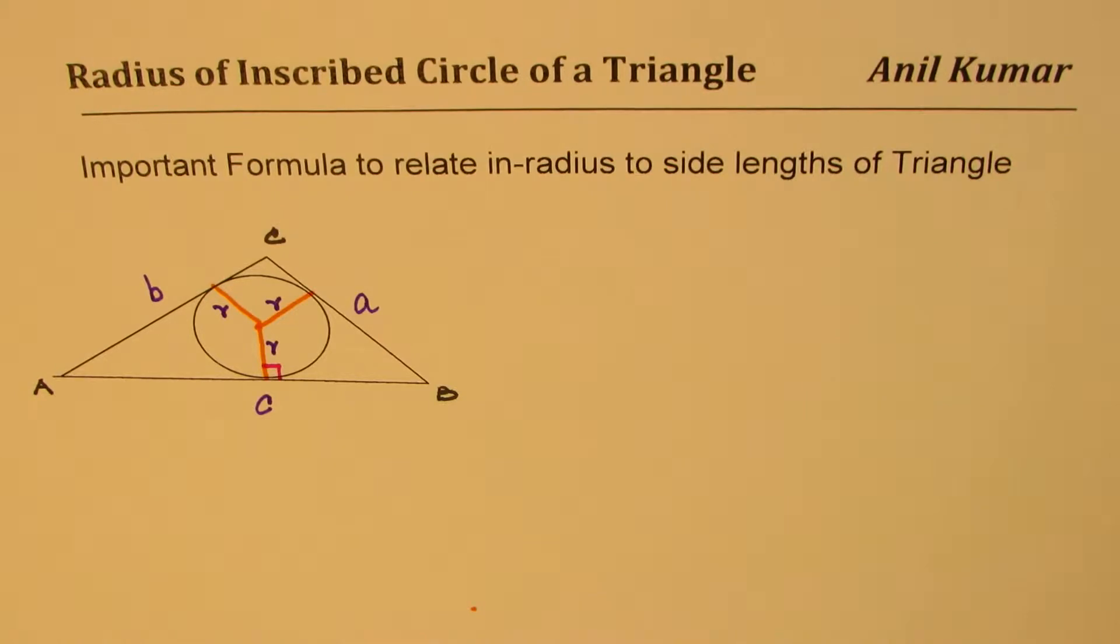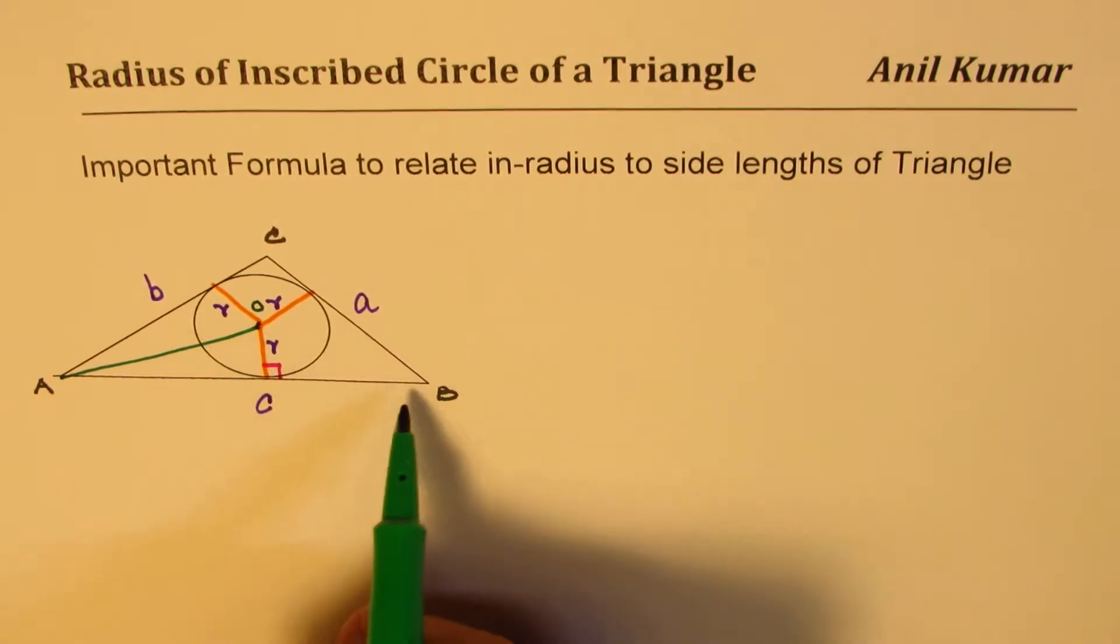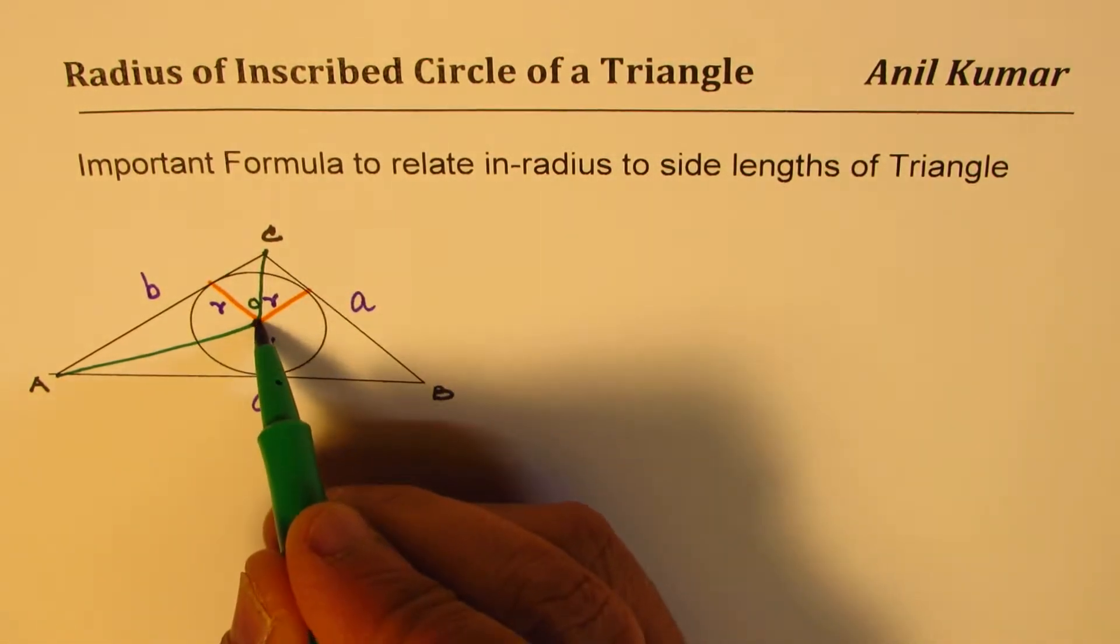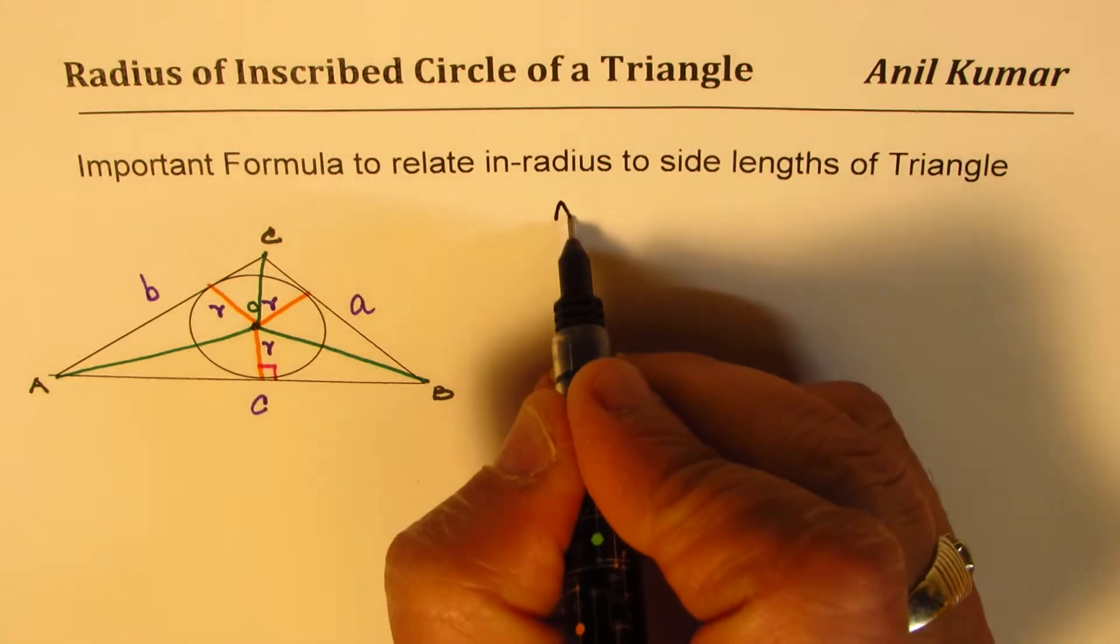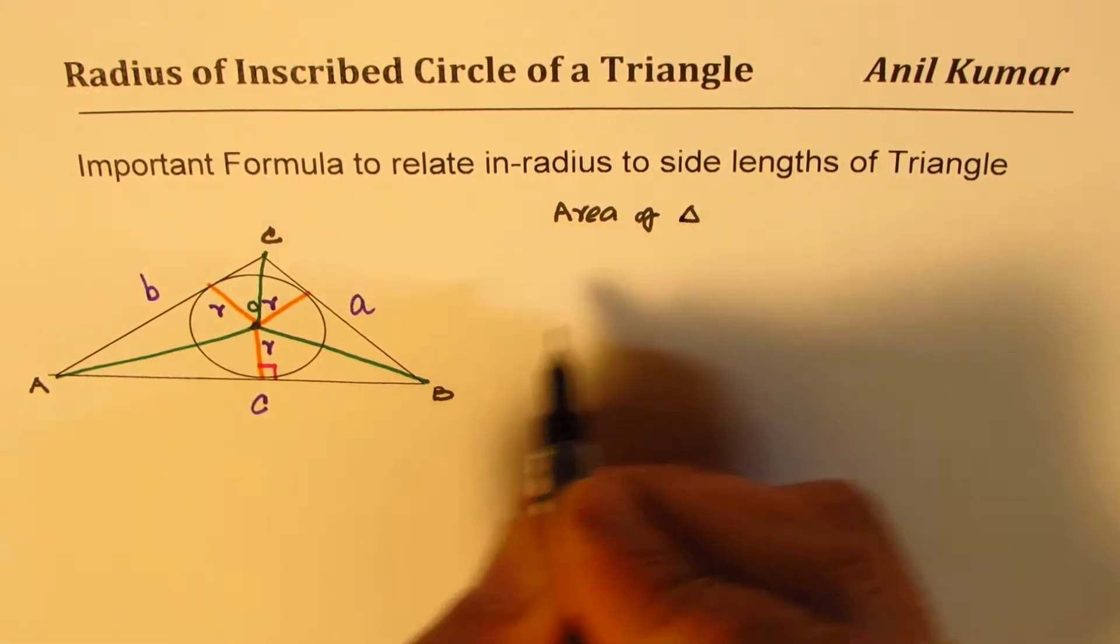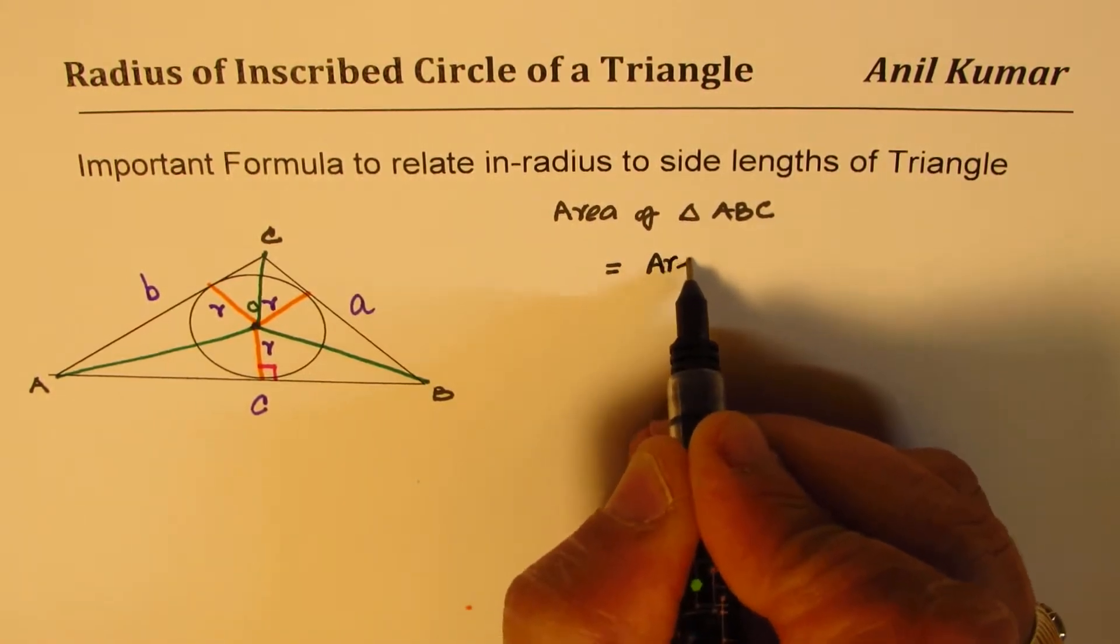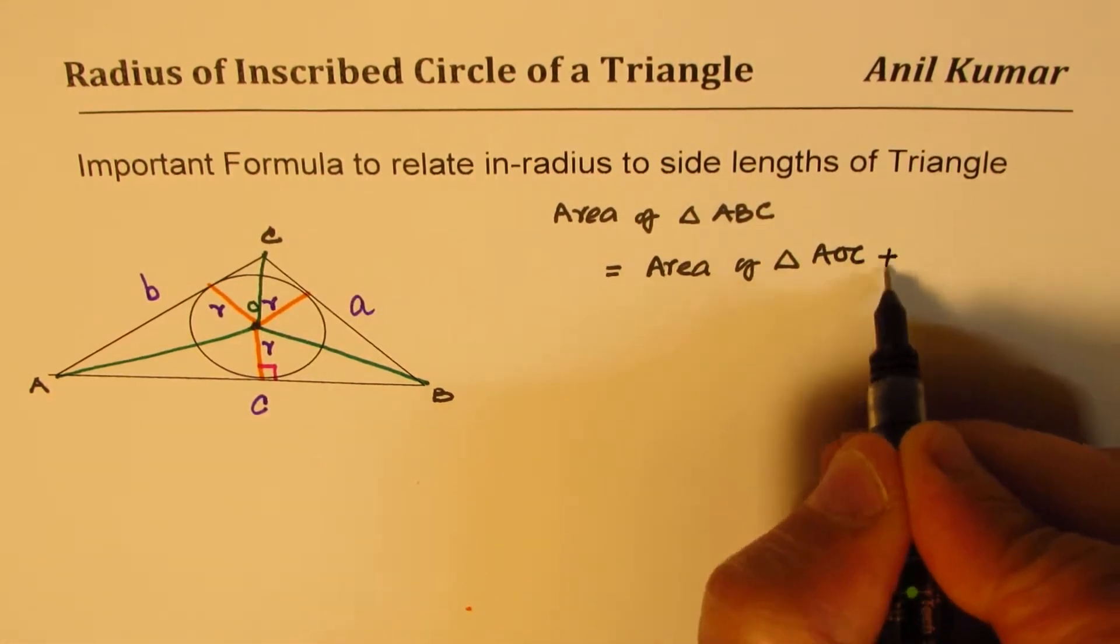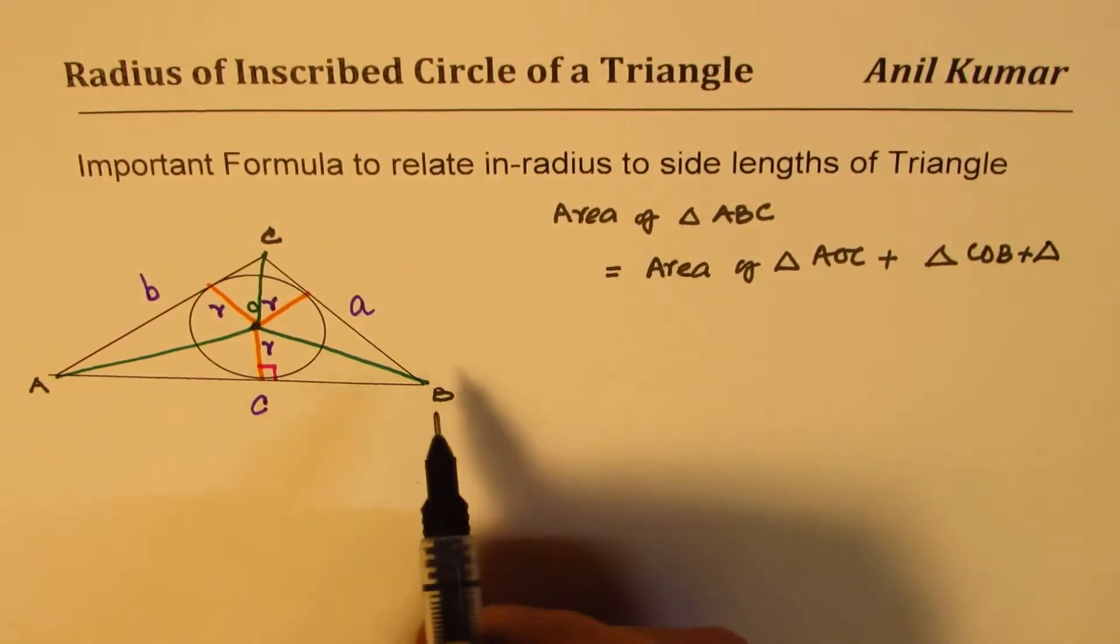Now, in this particular triangle, as you will see, if I join the center, let's say the center is O. So if I join the center with the vertices, then what do I get? I get three different triangles. Now, we can say that the area of the big triangle ABC is basically equal to area of small triangles AOC plus triangle COB plus triangle AOB.